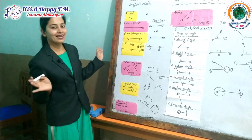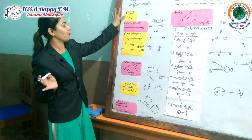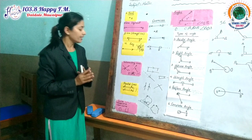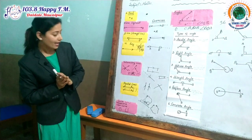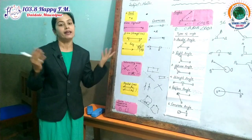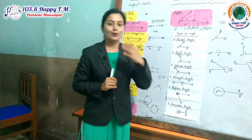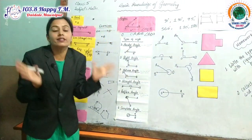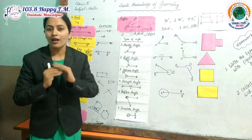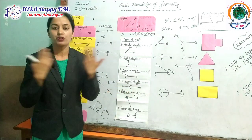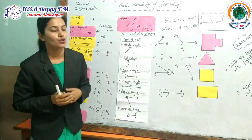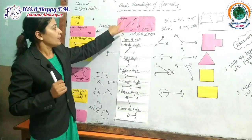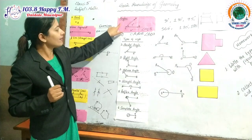I think you are clear about point, line segment, line, ray, intersecting line, parallel lines, and curve. Now I am going to discuss the heart of geometry. Without angles, geometry is not possible. Angle is the heart of geometry.